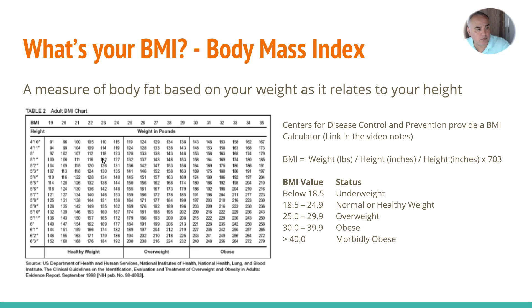This is a table for adult BMIs. You find your height on the left, follow the line across to your weight, then run it up to the top, and that tells you what your BMI is.